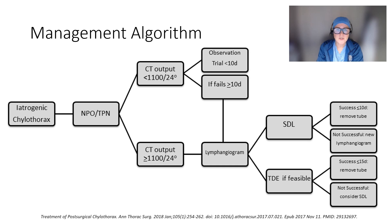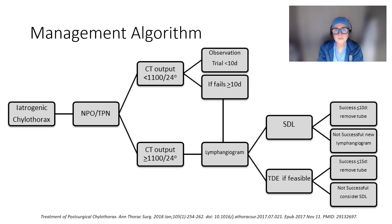However, if the patient is made NPO and placed on TPN and the chest tube output remains greater than 1 liter or up to 1100 cc in a 24-hour period, those patients should undergo a lymphangiogram to determine the distribution of chyle drainage through the chest and where the leak is occurring. Some patients may be best managed with surgical duct ligation, and if that is successful, the tube can be removed either before or after a fat challenge. If it is not successful, a lymphangiogram should be repeated.